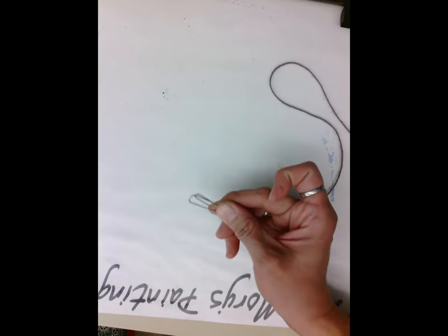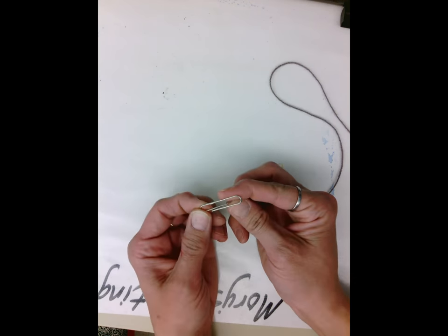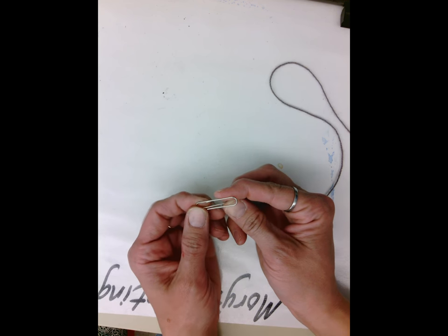Using a simple paper clip and a piece of tape, we're going to create our needle. The needle is the part that we use to actually sew in and out of our yarn that we just wrapped.